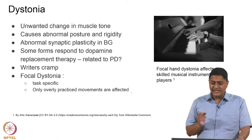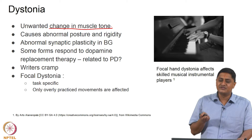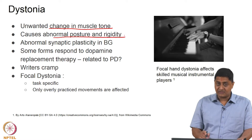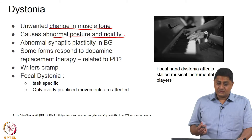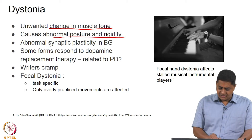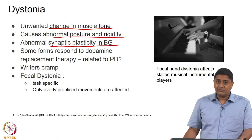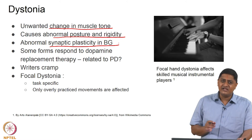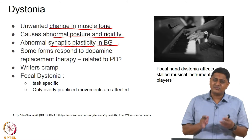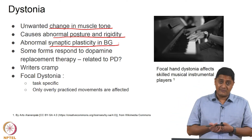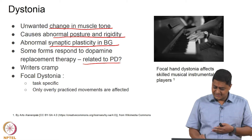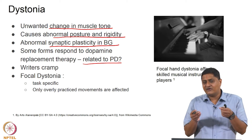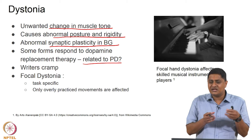Dystonia involves an undesirable amount of muscle tone, leading to abnormal posture and many times rigidity. The hypothesis is that this is caused by abnormal synaptic plasticity in the basal ganglia. Interestingly, some forms of dystonia respond to dopamine replacement therapy, raising the question of its relationship to Parkinson's disease. However, the exact link between basal ganglia and dystonia remains a mystery.